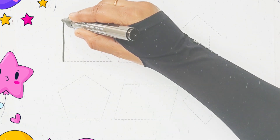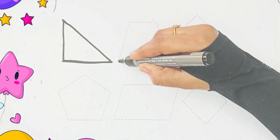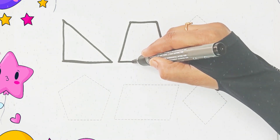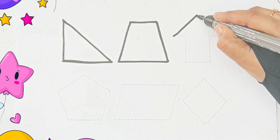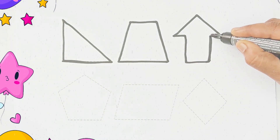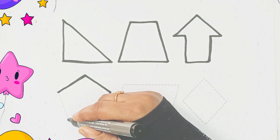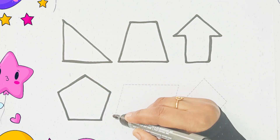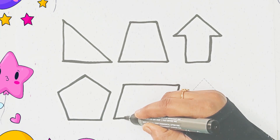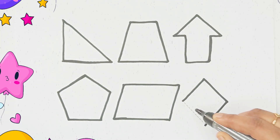Right triangle. Right triangle. Right triangle. Right triangle. Trapezoid. Trapezoid. Arrow. Pentagon. Parallelogram. Rhombus.